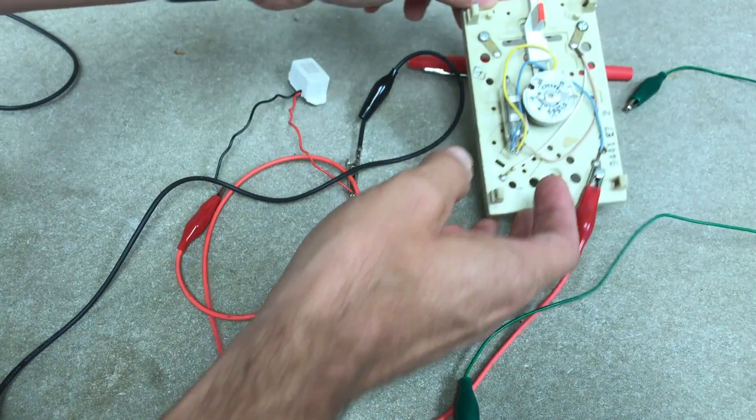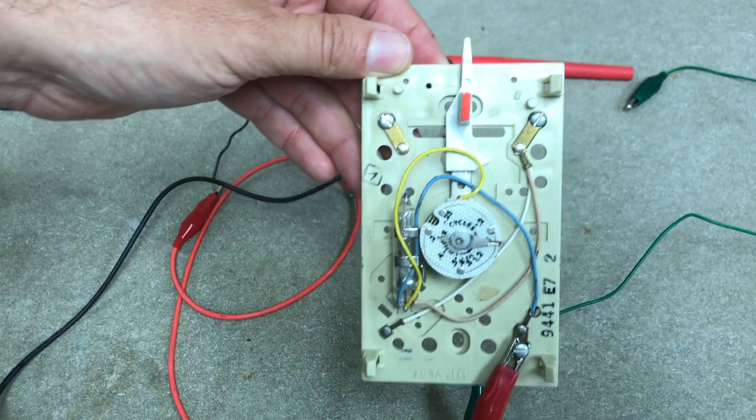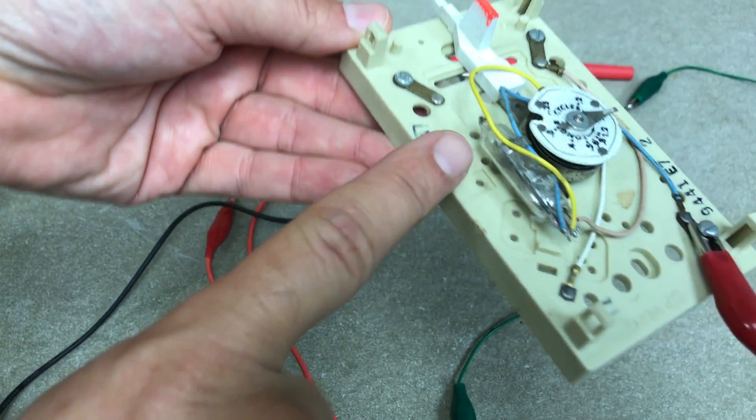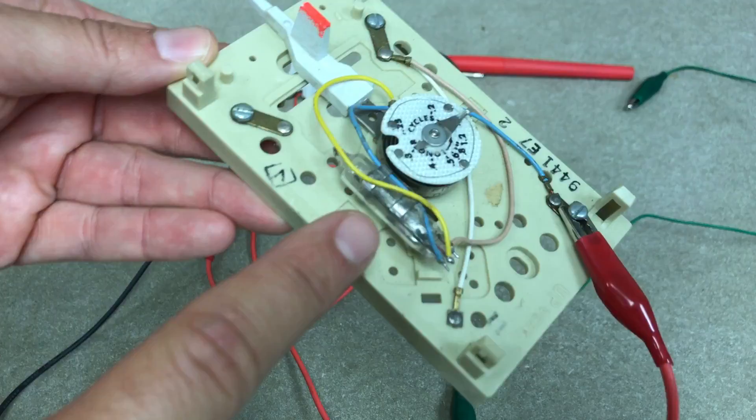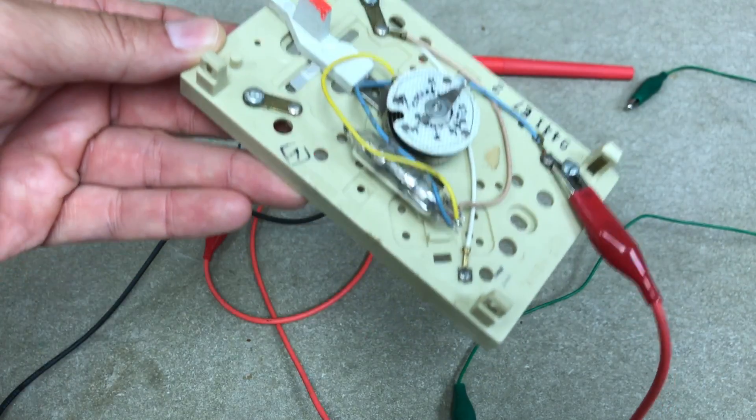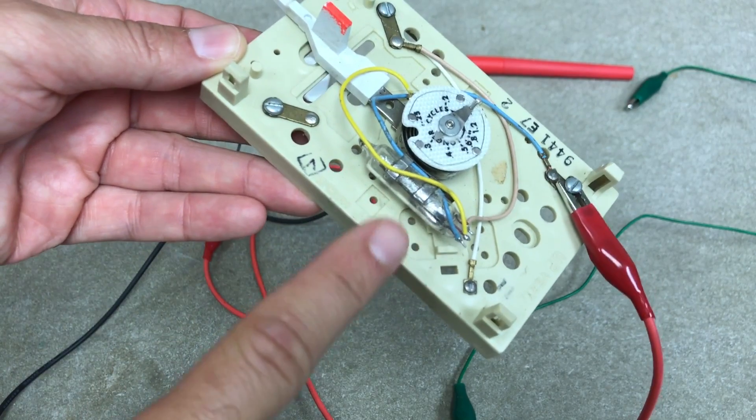This is a thermometer from your house and it has right here a mercury switch. The problem with this mercury switch is that it has mercury in it and mercury is some bad stuff. If this broke open you'd be in trouble.